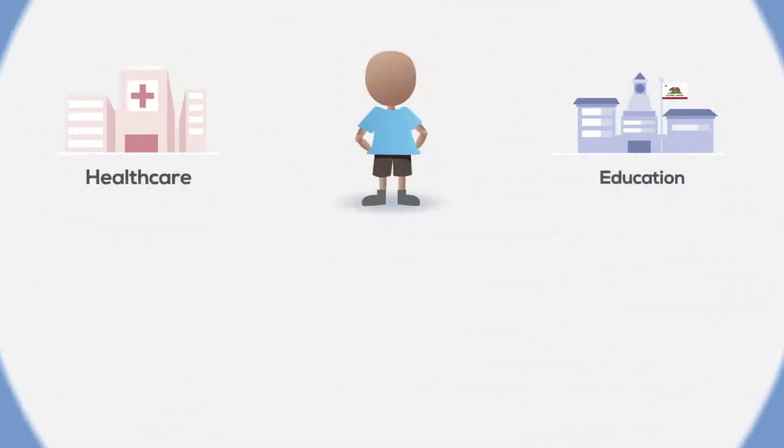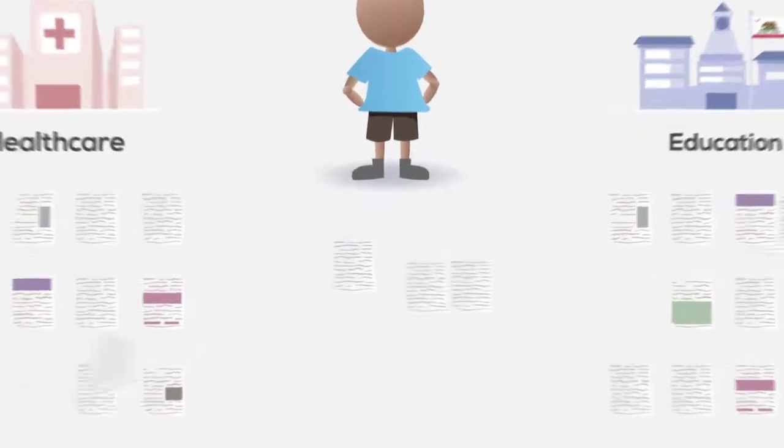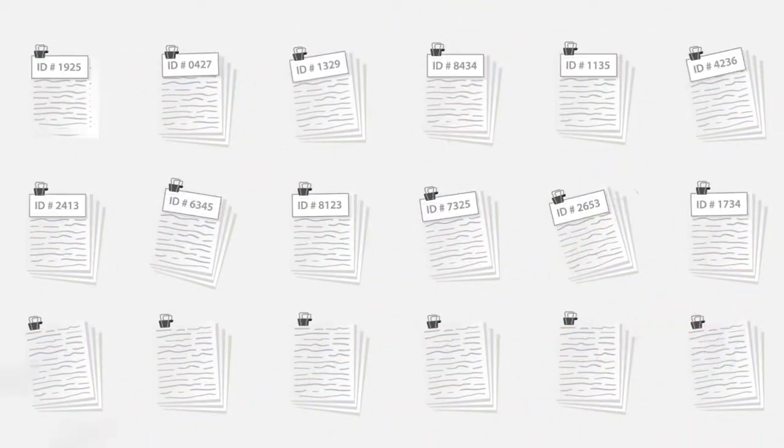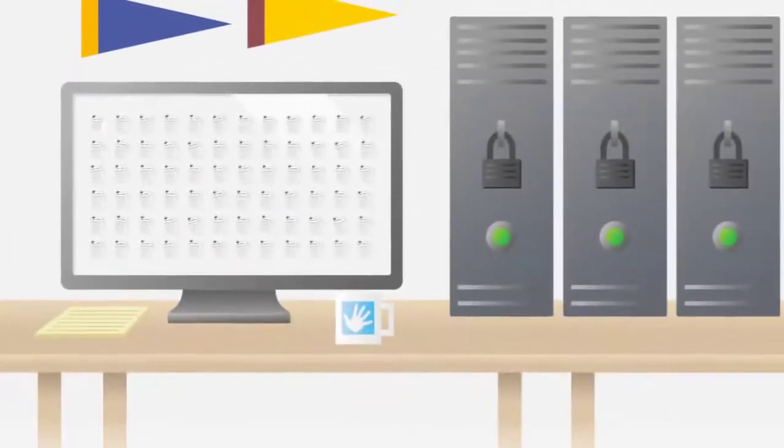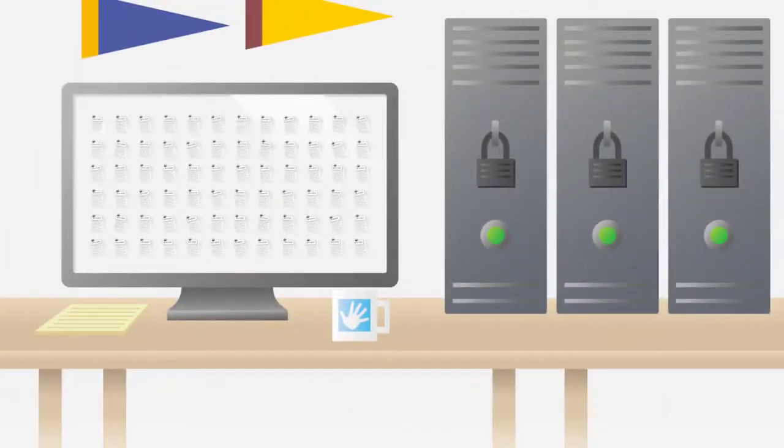It is through a process called record linkage that information for the same individual can be integrated and used for research and evaluation. After records have been securely linked and anonymized to protect confidentiality, these data can be aggregated to generate rich epidemiologic information and answer important questions.